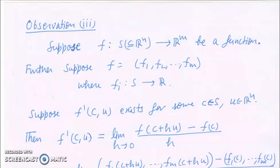In continuation with lecture 4, let us do some more observations. In this lecture we will determine the Jacobian matrix for a given function.